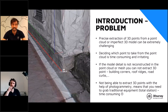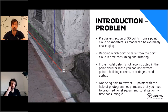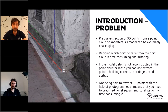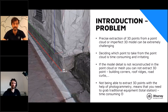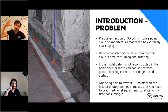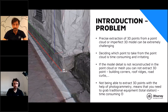If the model detail is not reconstructed in the point cloud or mesh, you cannot extract 3D points — details like building corners, roof ridges, road curves, and so on. If you are not able to extract those 3D points with photogrammetry, you need to use traditional technologies like total stations, which is time-consuming. Until now, we always advised customers that with photogrammetry you can extract approximately 80% of the details needed for a survey map, but you would still need some terrestrial measurements for hard-to-reach areas like building corners.